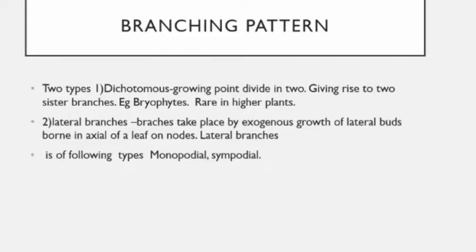In biparous type, when the terminal bud stops growth, further growth is continued by two lateral buds arising in the axil of two opposite leaves on a node. This axis is said to be multipodial. Examples are Mirabilis and Viscum.